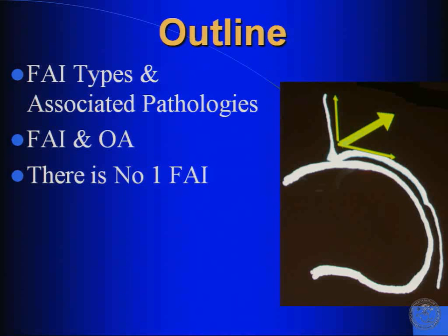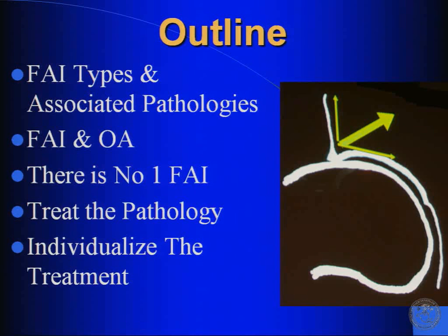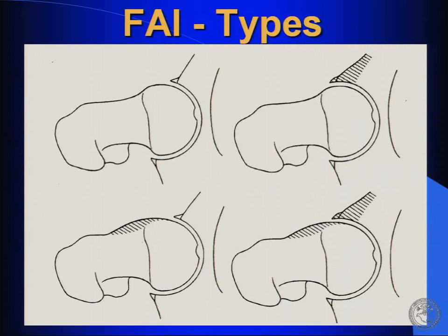Hopefully I'll prove that there's more than one type of FAI and certainly more than just one type of CAM or pincer. We've all seen this slide from Ganz's group in Switzerland, where you talk about the pincer with the overcoverage on the acetabular side, the CAM lesion on the femoral side, a loss of offset at the head and neck junction, and then combined type of impingement.